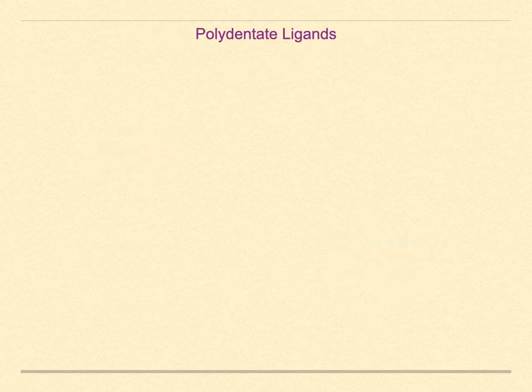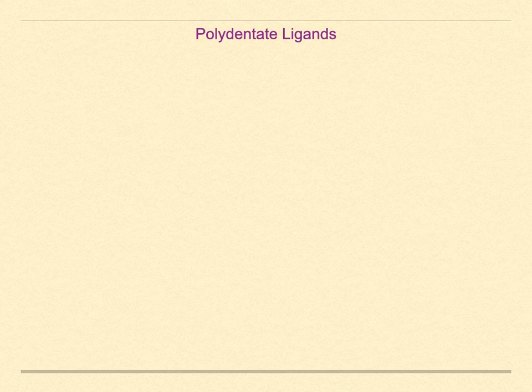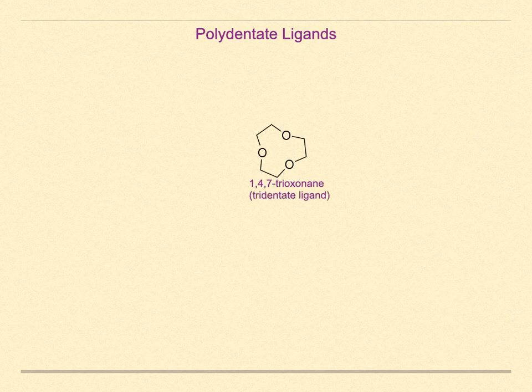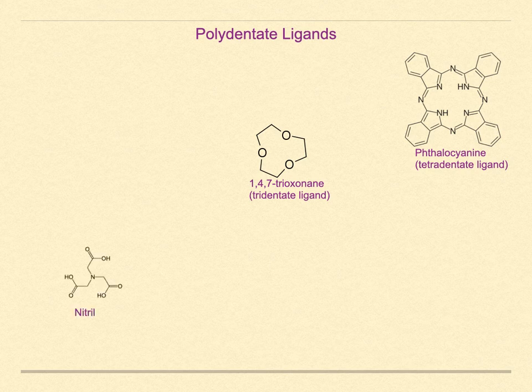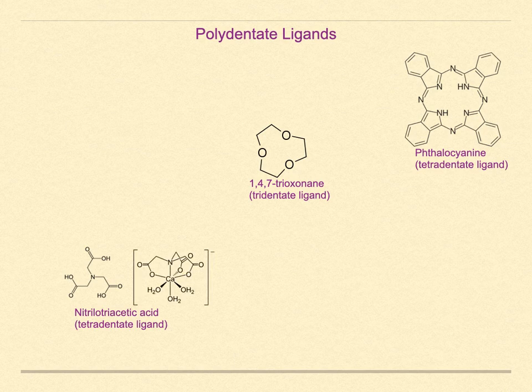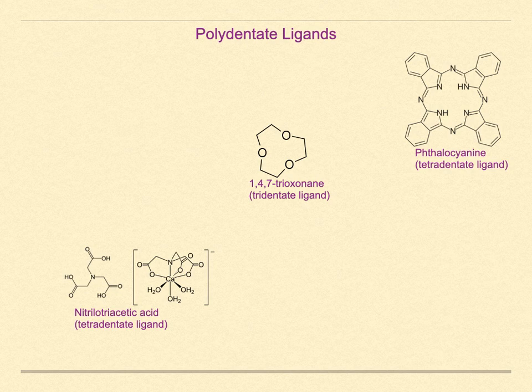The polydentate ligands readily form strong bonds with the target metal ion center. There are tridentate ligands. Here's an example. The 1,4,7-trioxynane is a ligand which has been used to bind lithium ions. There are many tetradentate ligands, such as phthalocyanine, with four nitrogen atoms forming bonds to many different metal ions. Here's another, nitrilo-triacetic acid. It forms bonds with the three carboxylic oxygens as well as the central nitrogen atom. Here it is bound to a calcium ion, along with bonds to three water molecules.